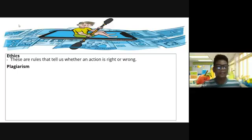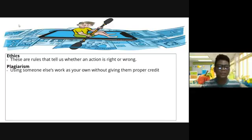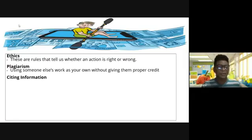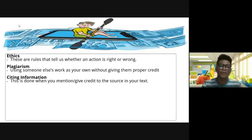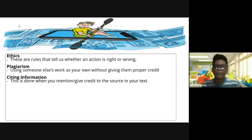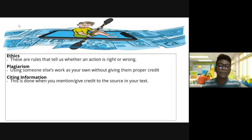Next is plagiarism: using someone else's work as your own without giving them proper credit. What you should do is cite your information — this is done when you mention or give credit to the source within your text. In order to avoid plagiarism, you have to cite the writers or owners of the text or information that you use in your research or study.